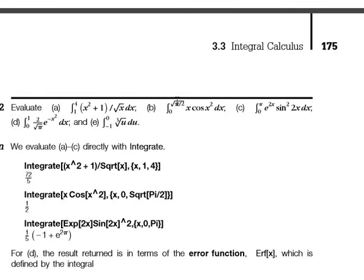Same with this one. We write Integrate square bracket x cosine of x squared dx, and the initial value is 0 and the final value is the square root of pi by 2. And click shift plus enter and get the result.